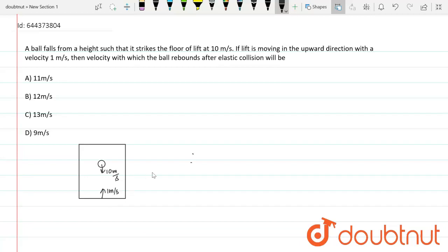So you have to find the velocity with which the ball rebounds after elastic collision. Okay, so that means after elastic collision, I assume that the lift will definitely be moving with the same speed 1 meter per second. It will be moving with 1 meter per second in the vertical direction. So I'll consider the velocity of the ball to be V. So this is what we have to find.